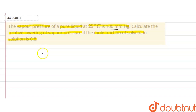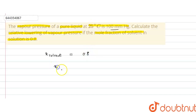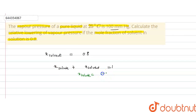The mole fraction of the solvent is given as 0.8. We know that mole fraction of solute plus mole fraction of solvent equals 1. Therefore, mole fraction of solute = 1 − 0.8 = 0.2.